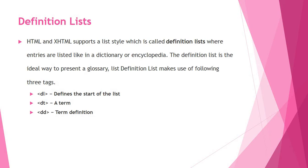The third type of list is the definition list. HTML supports a list style called definition list where entries are listed like in a dictionary or encyclopedia. It is the ideal way to present a glossary. The definition list uses three tags: dl (definition list) to mark the start; dt (definition term) for the term being defined; and dd (definition description) for the definition of that term.